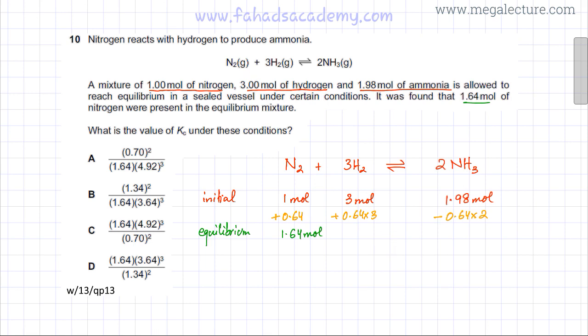So my final equilibrium moles for H2 are going to be 3 plus 0.64 times 3, which is going to give me 4.92 moles. And my equilibrium moles for NH3 are going to be 1.98 minus 0.64 times 2, so this would become 0.70 moles. And so I have the equilibrium moles of all three of my reactants and my products.